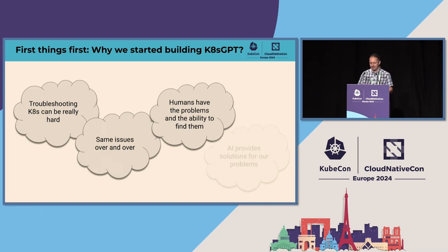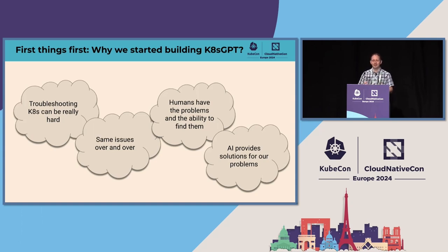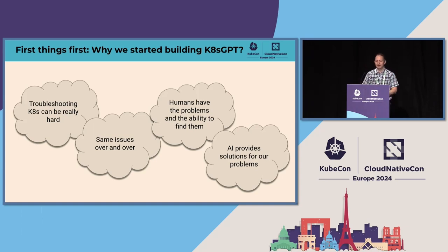The AI itself is able to provide solutions for our problems. For instance, if we collect enough information to find all of the related resources, we can put this into an AI model and it can tell us what the problem is.